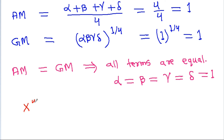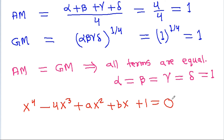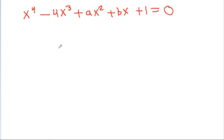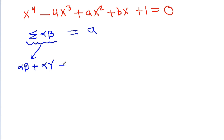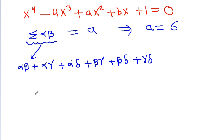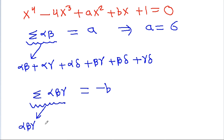The given equation is x⁴ - 4x³ + ax² + bx + 1 = 0. Now, σ(alpha·beta) = alpha·beta + alpha·gamma + alpha·delta + beta·gamma + beta·delta + gamma·delta, which gives a = 6. And σ(alpha·beta·gamma) = -b, which includes the terms alpha·beta·gamma + alpha·beta·delta + alpha·gamma·delta + beta·gamma·delta.